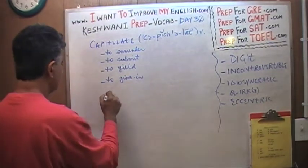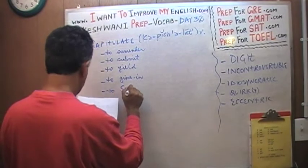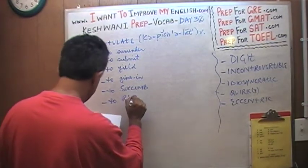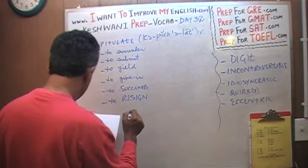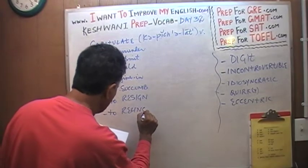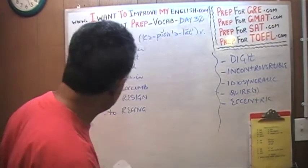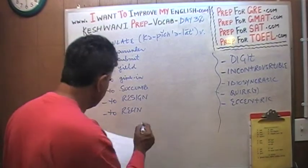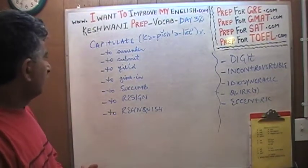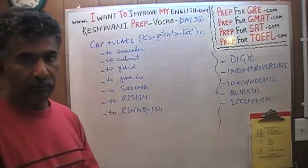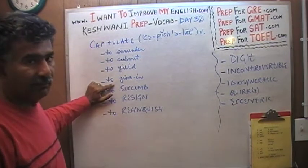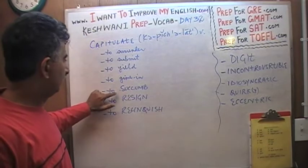Capitulate means to give in, to succumb, to resign, or to relinquish. So one more time: capitulate has no relationship at all with recapitulate. Capitulate means to surrender, to submit, to yield, to give in. Notice it is to give in — not to give up. It means to give in, to surrender, to succumb.